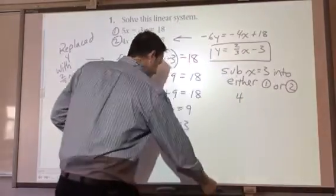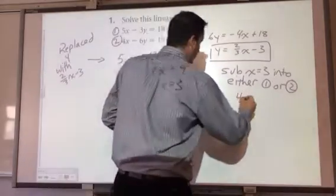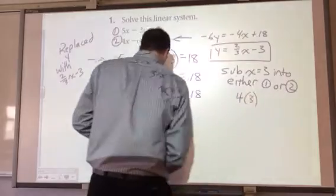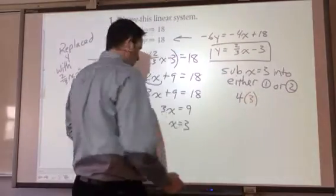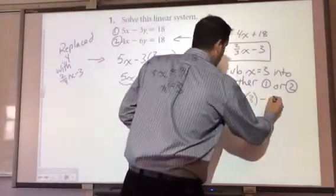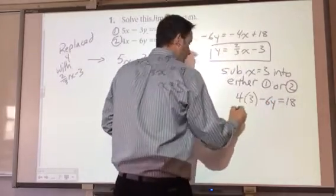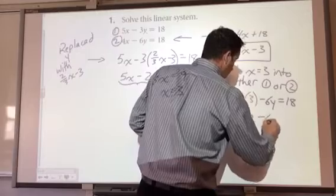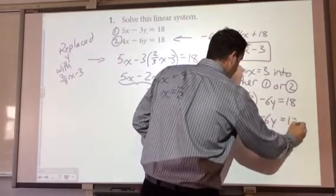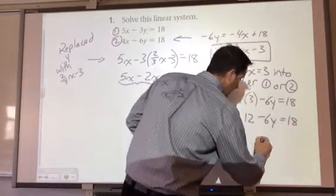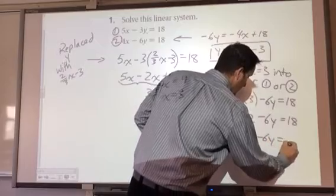So, that means I have 4. Subbing it in times 3. Minus 6y equals 18. So, I have 12 minus 6y equals 18. Subtract 12 from both sides. Negative 6y equals 6.